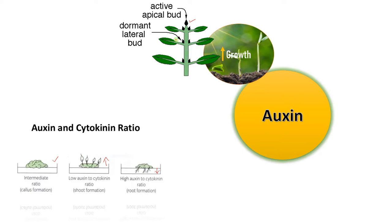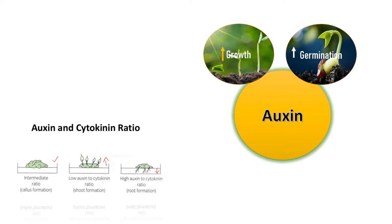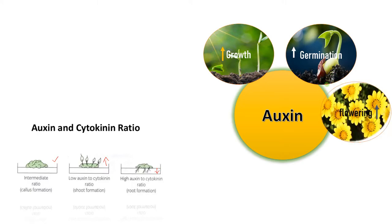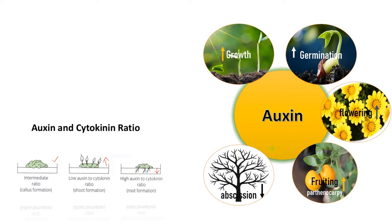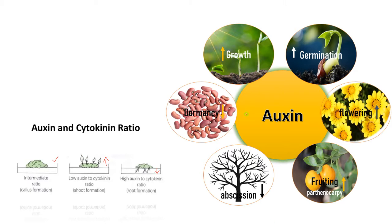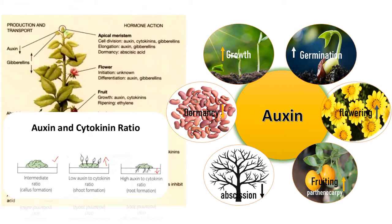Auxin promotes germination by breaking dormancy, promotes flowering in many plants, and promotes fruiting — especially parthenocarpy, the formation of fruits without fertilization, thereby producing seedless fruits. It prevents abscission and senescence, as it is a growth promoter. Regarding transport, auxin is synthesized at the shoot tip or shoot meristem, and its transport is polar — moving top to bottom, called basipetal transport.